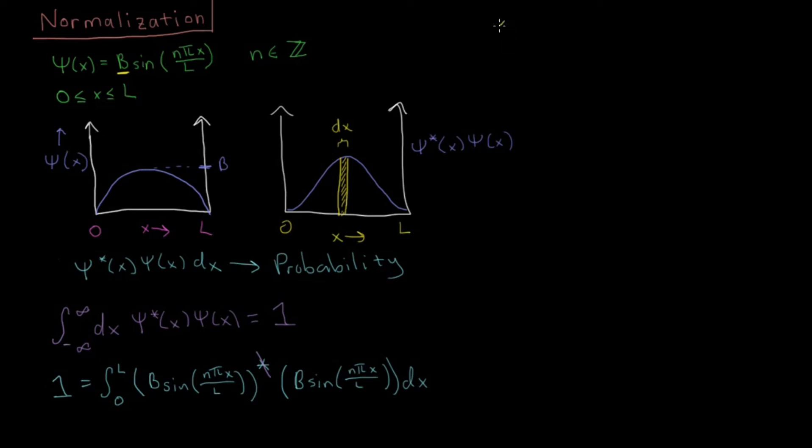So that gives us one equals - we can pull a b squared out in front - integral zero to L of sine squared n pi x over L. At this point you could say, okay, let's do this integral of sine squared, or we can make that a little bit simpler using a trig identity.